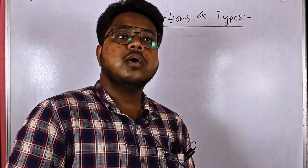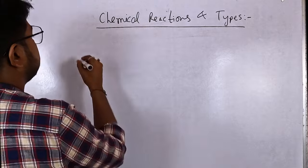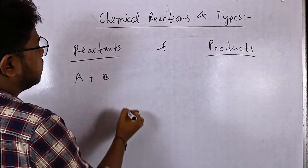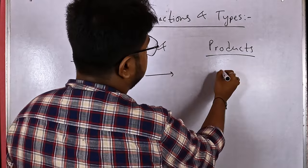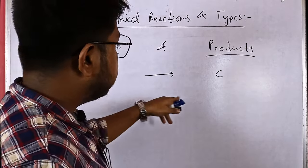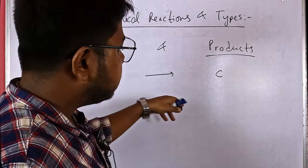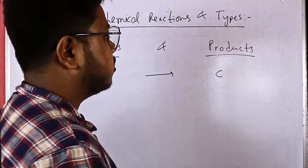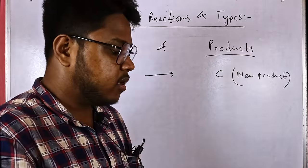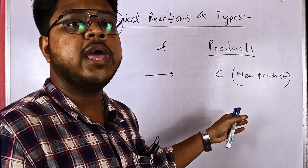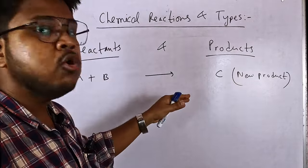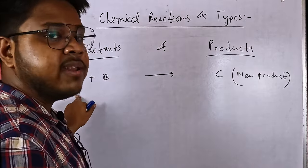First, what are the reactants and what are the products? Suppose A and B are reacting with each other and forming a product C. Here, A and B are the reactants, and after the reaction, they form a particular product C — a new product. In every chemical reaction, from product C there cannot be a reverse reaction. The reactants react with each other to form the product, and we cannot get back to the previous reactants A and B.